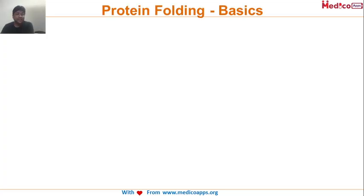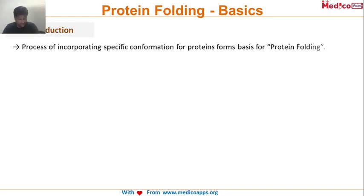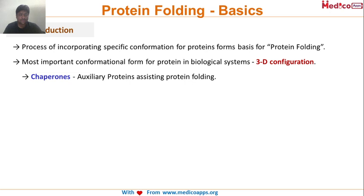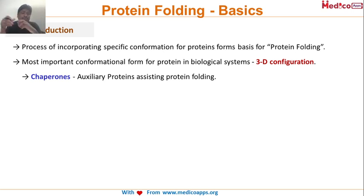Let's understand the basics of protein folding. Protein folding is the process of acquiring the specific conformation of a protein. The most important conformational form of a protein in biological systems is the 3D configuration. Essentially, protein folding is folding the protein in such a way that it acquires its 3D structure and is able to perform its function.